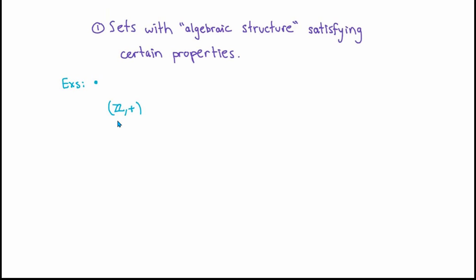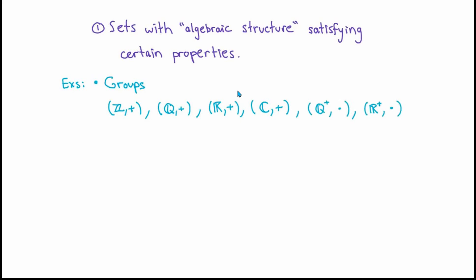There are lots of other familiar examples like this: the rationals together with addition, the reals together with addition, and the complex numbers together with addition — all of these are basic examples of what are called groups. There are other familiar binary operations on these sets that we can use to create groups. For example, the positive rational numbers together with multiplication, or the positive real numbers together with multiplication, also form groups. You need to be a little bit careful — the collection of all rational numbers or all real numbers together with multiplication doesn't actually form a group.